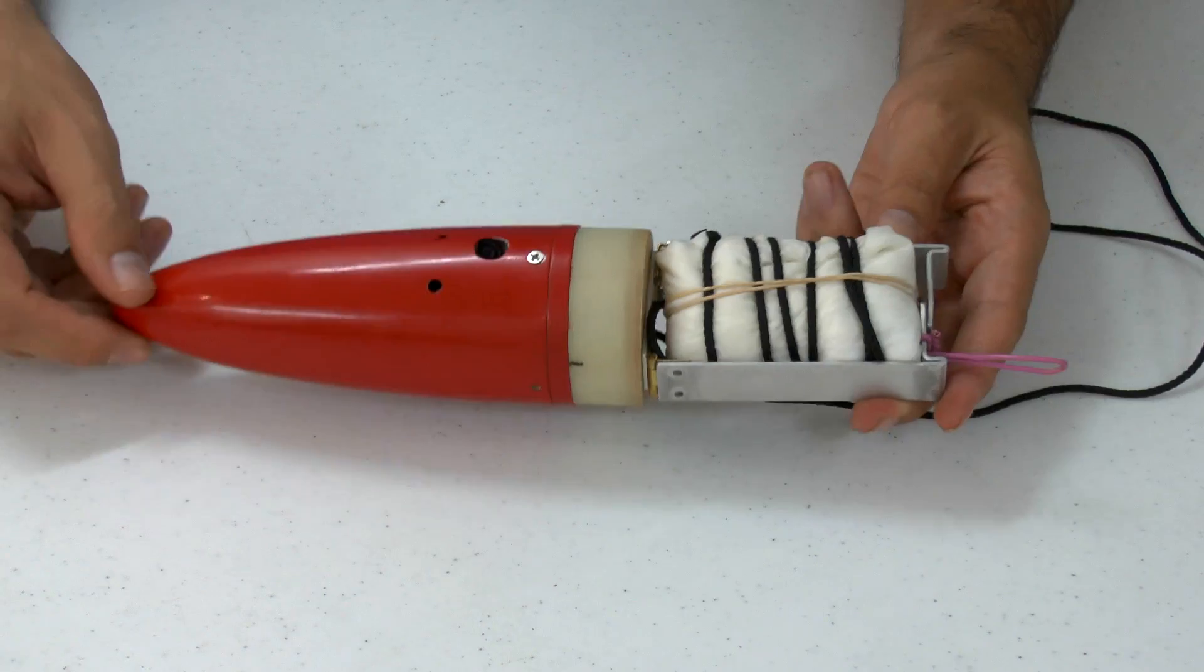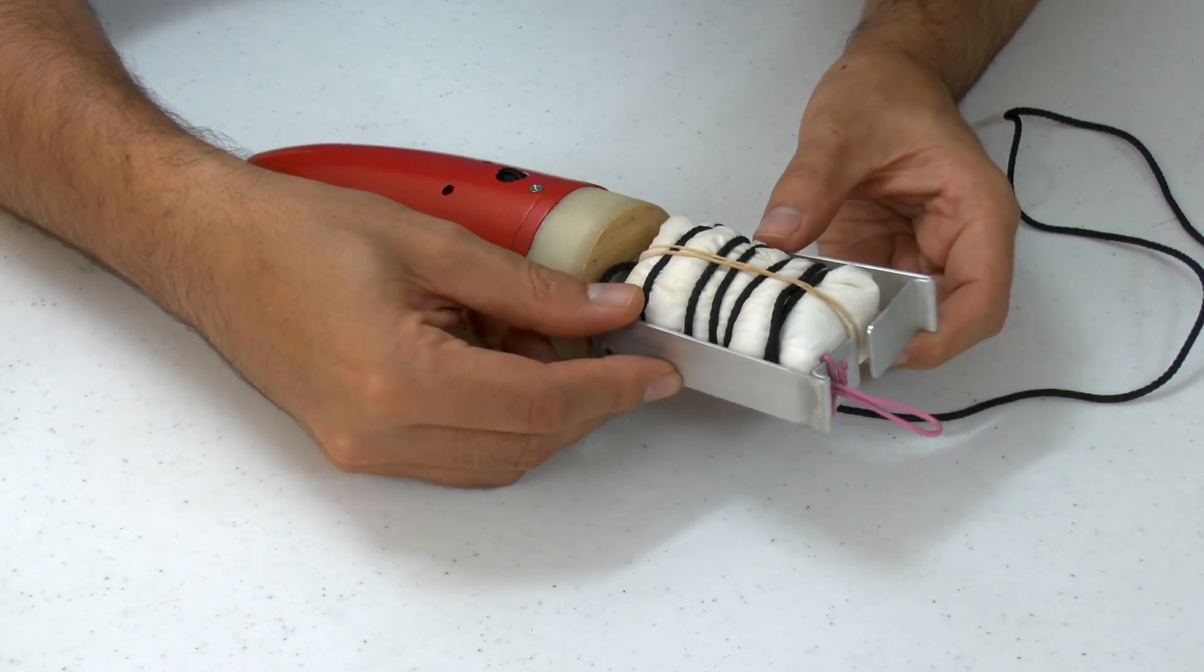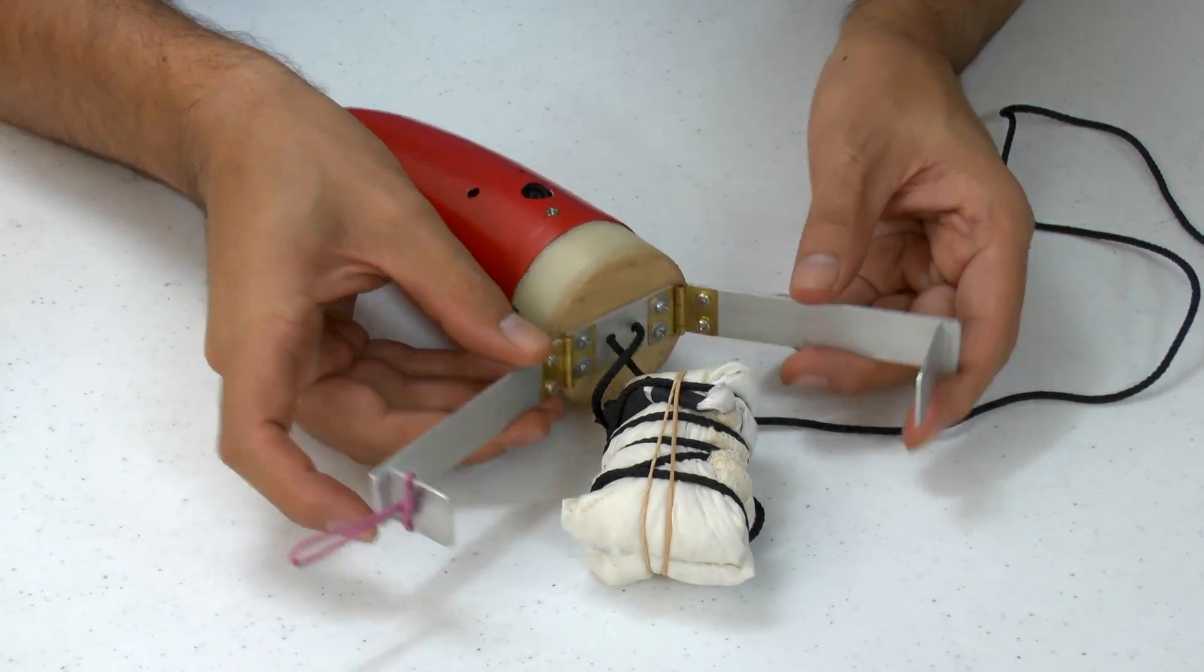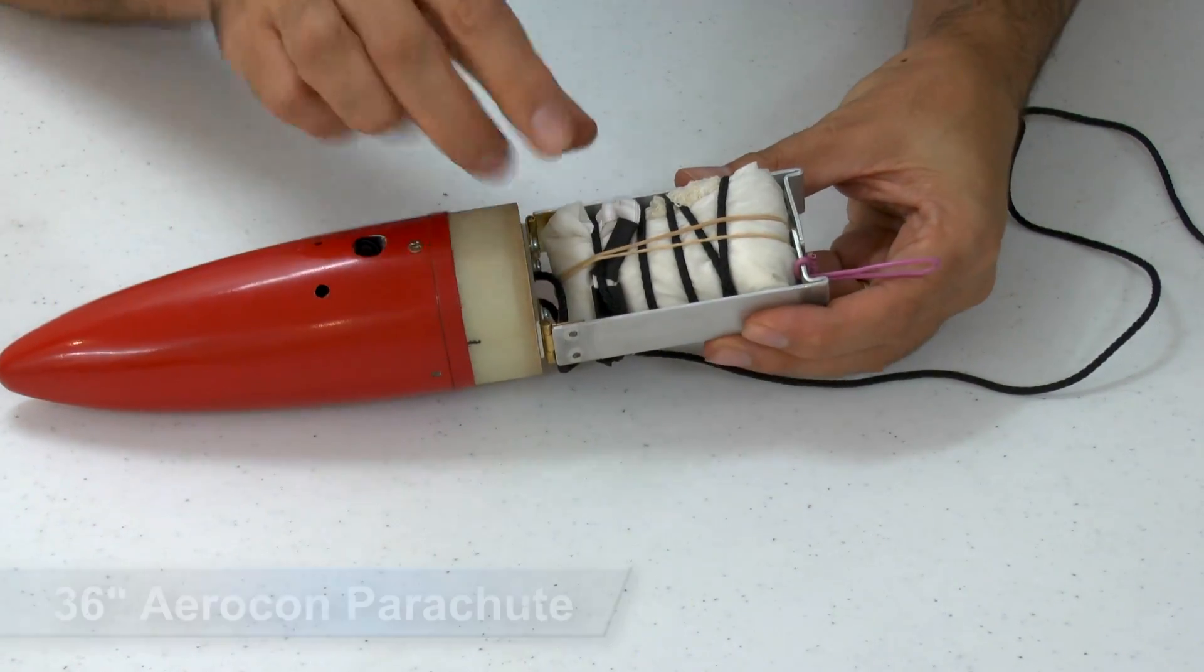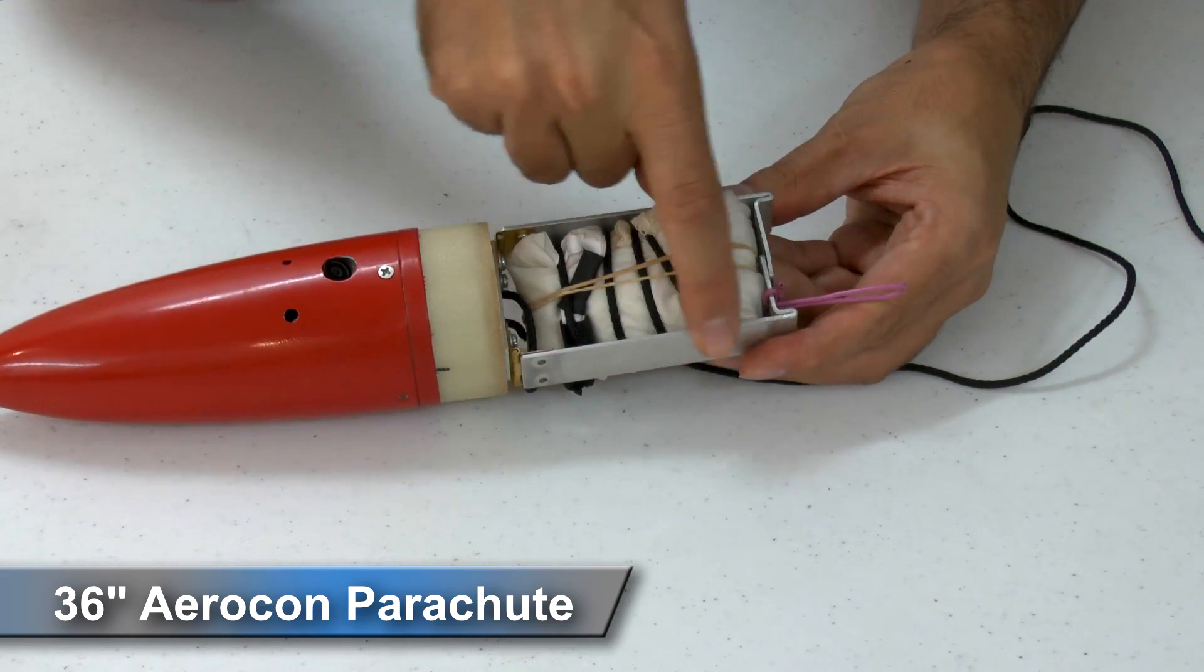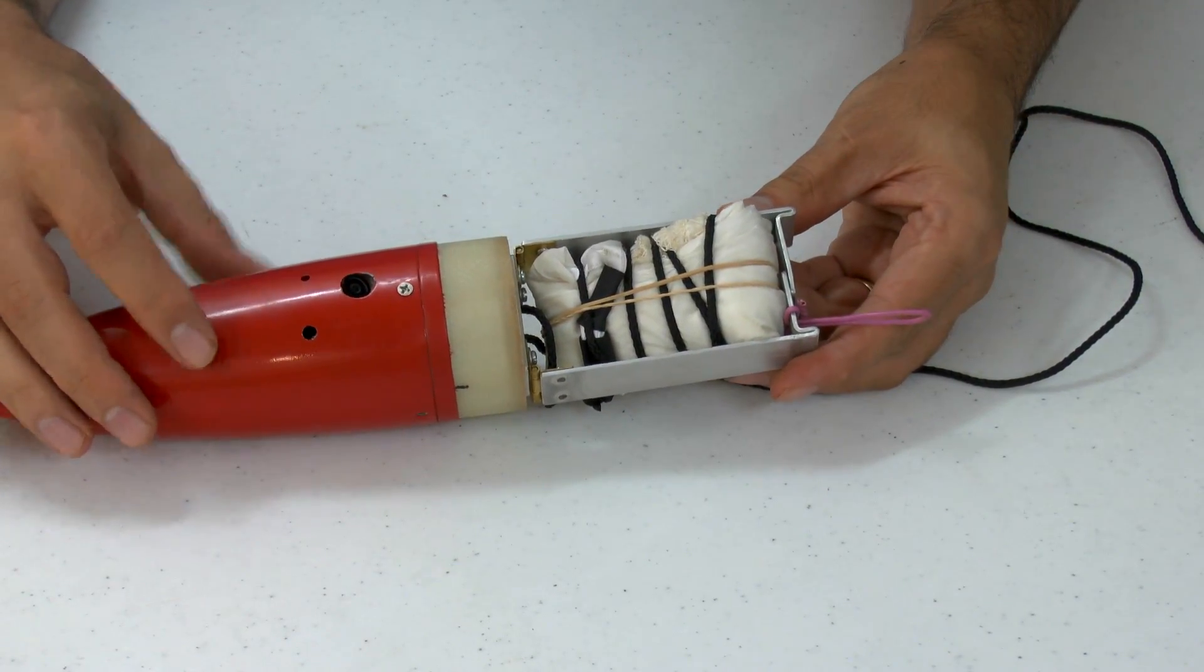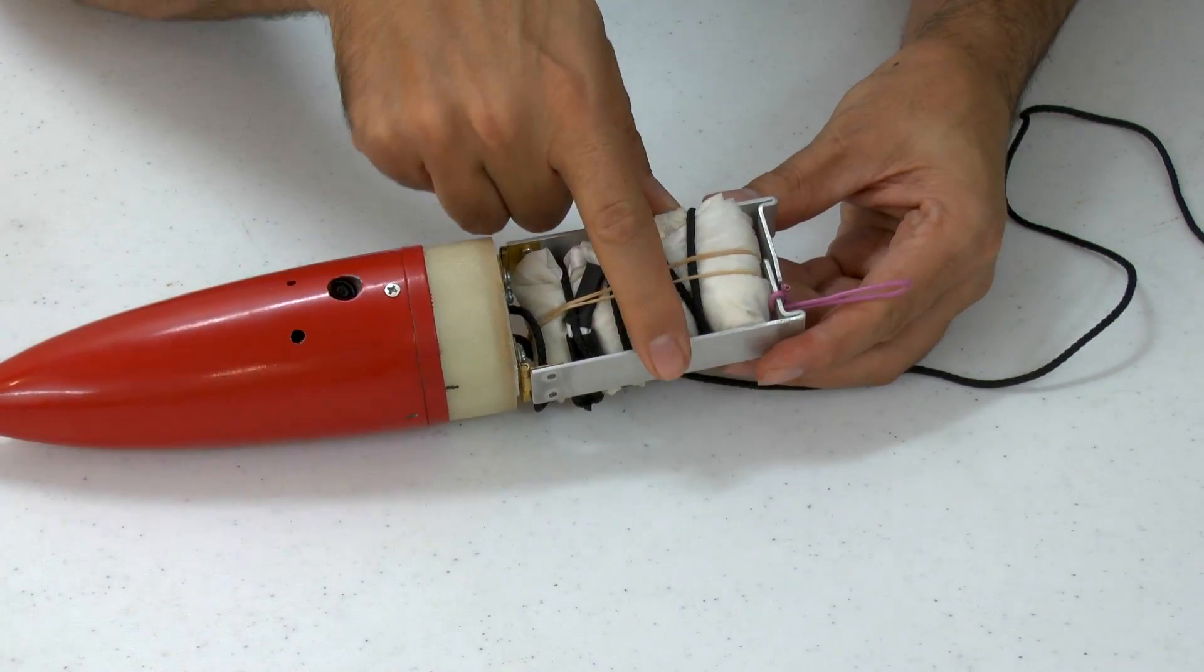The nose cone's equipped with a pair of grapple arms that are hinged and free to swing open. While they're inside the payload bay like this with a parachute between them, the body tube stops them from opening and the parachute stops them from folding inwards.